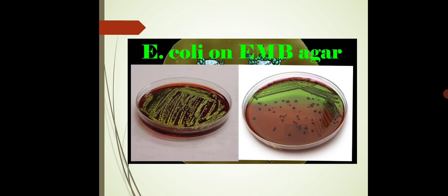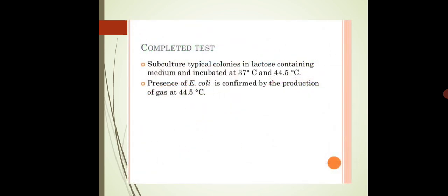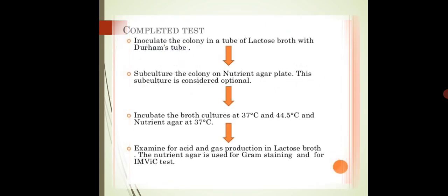That was all about the confirmed test, which confirms that the color change and bubble formation we got in the presumptive test is the indication of fecal coliforms and especially E. coli. Moving to the next test — the complete test. In the complete test we take this EMB agar plate and subculture the colonies onto lactose-containing medium or lactose broth or MacConkey broth with an inverted Durham strip.